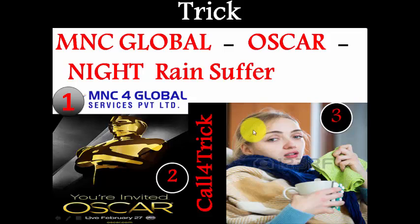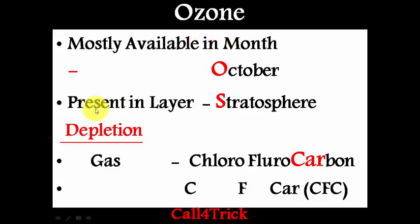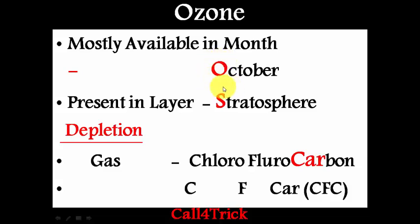Let's see the importance of ozone. Ozone is mostly available in the month of October. Ozone is present in the layer stratosphere. The gas responsible for ozone depletion is chlorofluorocarbon (CFC). Now, the month October starts with the letter O — it is the only month starting with O — so try to remember O for October, meaning ozone is mostly available in October.